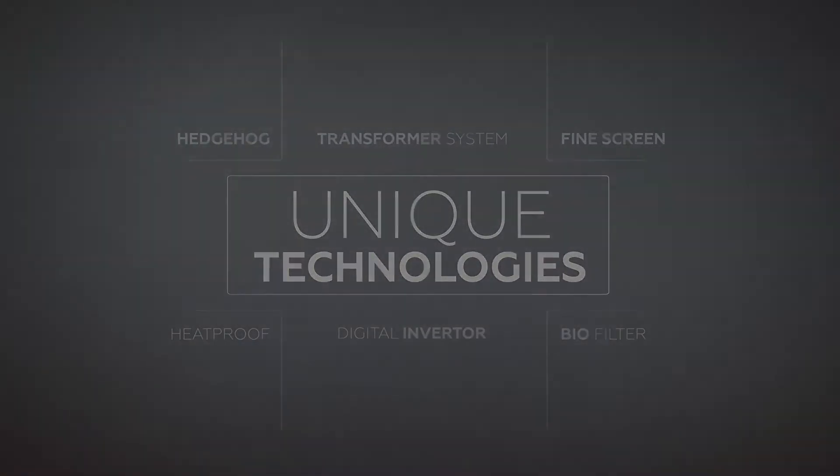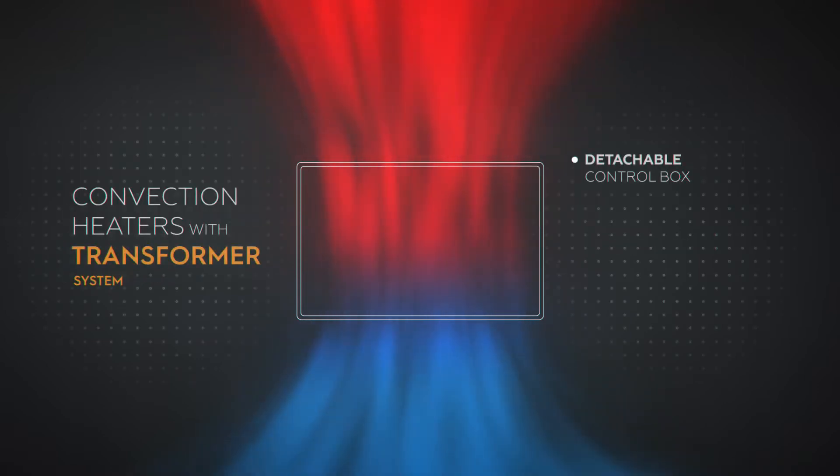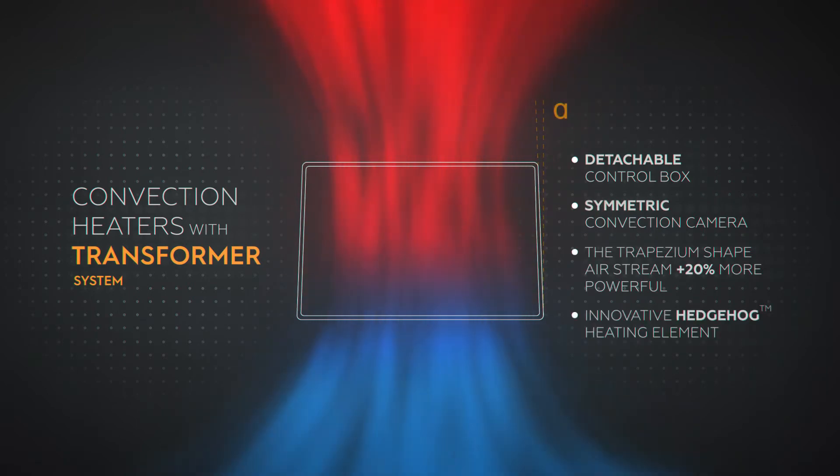One of a kind technologies are implemented in convection heaters with a Transformer System. The body of the convection heater has a unique trapezium shape. Thanks to the detached control box, the convection camera is totally symmetric.